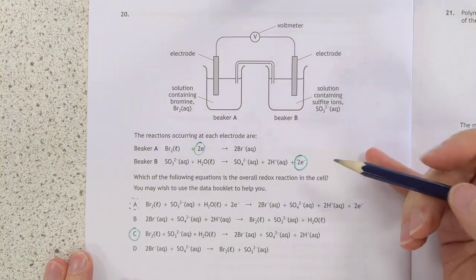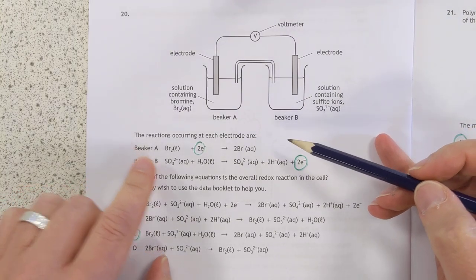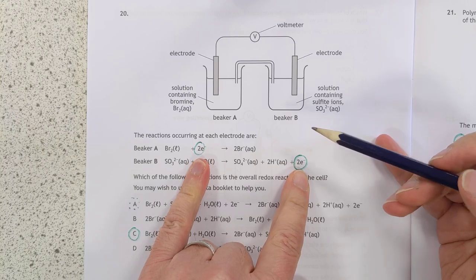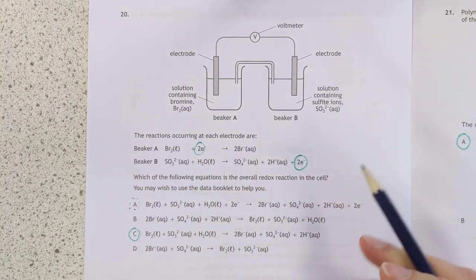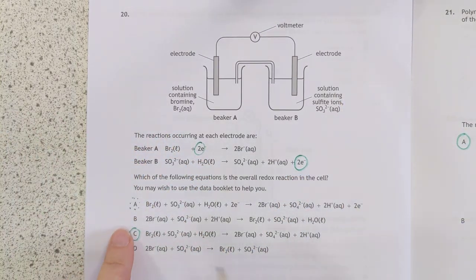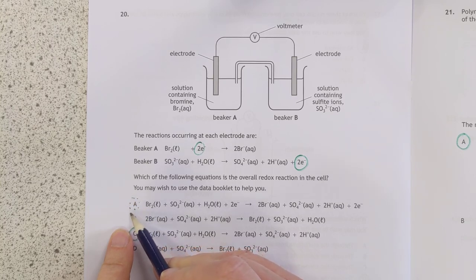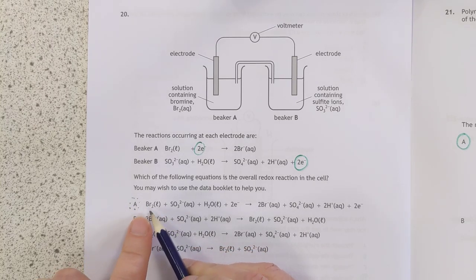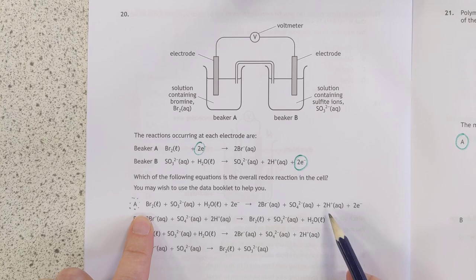20 is a redox question. The reduction and the oxidation both contain two electrons. So we don't need to do any multiplying. We just need to mash everything together. And you're tempted to put the first answer here, which is why I put a ghost ring around about it. Because everything's been fine.